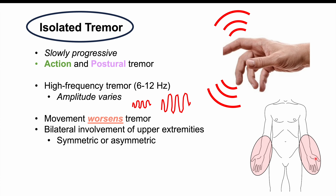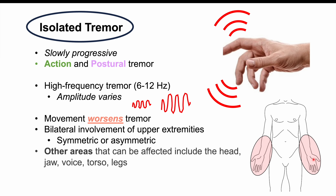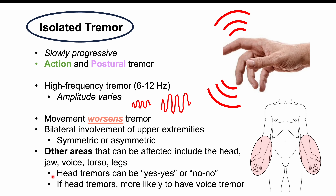Generally speaking, the tremor is mostly symmetric or very minimally asymmetric. Other areas of the body can also be affected, including the head, jaw, voice, torso, and legs, though leg involvement is very rare. Head tremors can manifest as a 'yes-yes' or 'no-no' tremor, and if there is a head tremor, a voice tremor is more likely to be present as well.